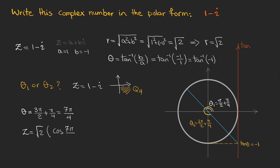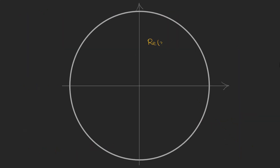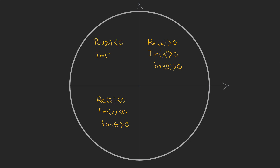So our choice is theta 2 which is 7 pi over 4, and we can write our complex number in polar form. We can also use theta equal to minus pi over 4. In the first quadrant both real and imaginary parts are positive so tangent is positive. In the third quadrant both are negative so tangent is also positive. In the second quadrant tangent is negative because the real part is negative and imaginary part is positive. The same applies in the fourth quadrant where the real part is positive and the imaginary part is negative.